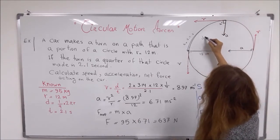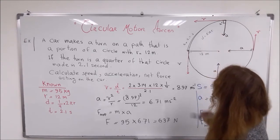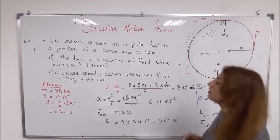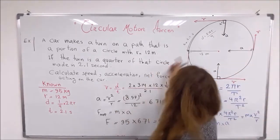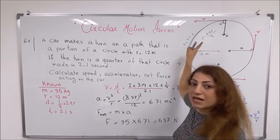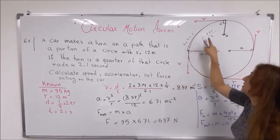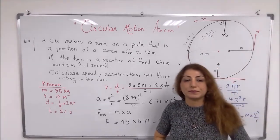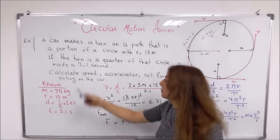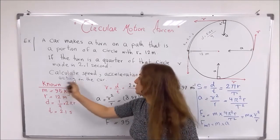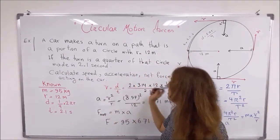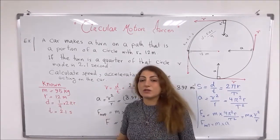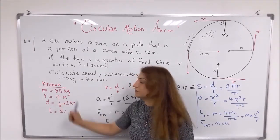The total distance of the full circular path is 2πr. The distance of the quarter arc means dividing by 4: distance = 2πr / 4. The mass of the car is 95 kg, and the radius of the path is 12 meters.